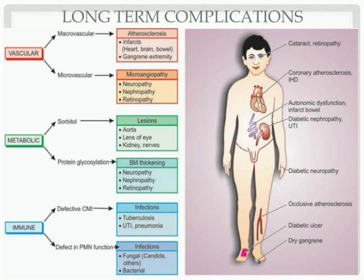Metabolic complications mainly include the accumulation of sorbitol in blood vessels, which deposits in the aorta, lens of the eye, kidneys, and nerves. In the aorta, sorbitol accumulation causes major occlusions. In the lens, it causes cataract. In the nerves, the patient will be unable to sense pain. Protein glycosylation mainly causes basement membrane thickening and leads to neuropathy, nephropathy, and retinopathy.